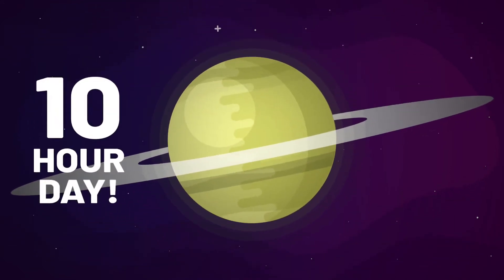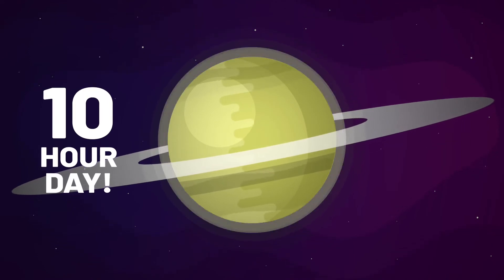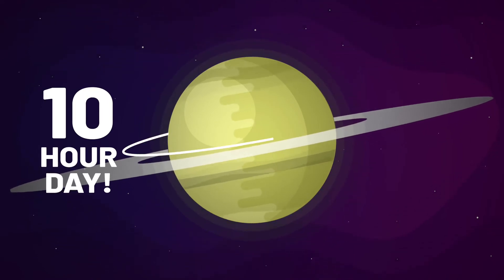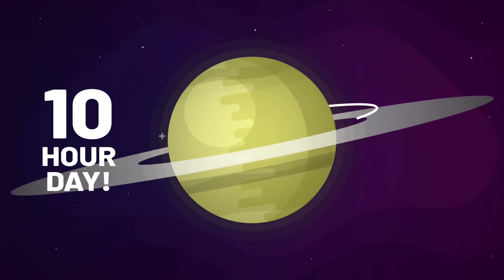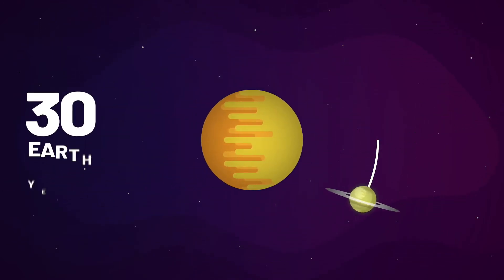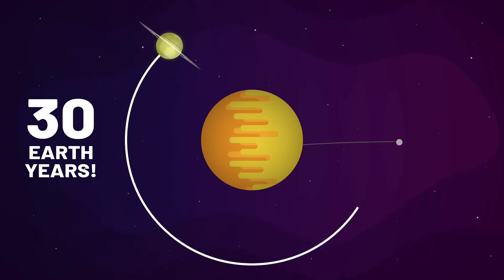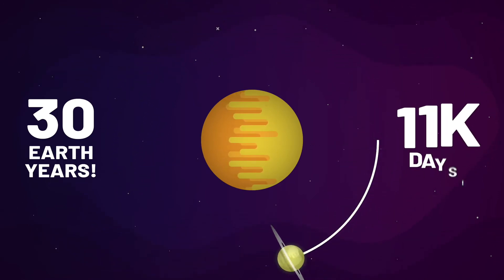And it rotates quickly, too, giving weight to days a little less than 11 hours. Not so bad. But at nearly a billion miles from the Sun, it would take Saturn nearly 30 Earth years to complete its orbit, making a year last for almost 11,000 days.